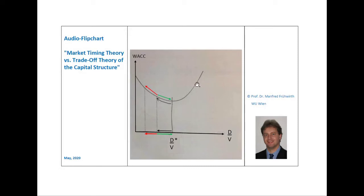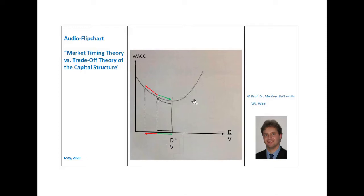Compared to the optimal capital structure, if the firm is using a lower debt ratio, then it could reduce the WACC by borrowing more and enjoying higher tax shields. In that case, the benefit from higher tax shields exceeds the damage from higher expected bankruptcy costs. If, however, the firm is using a higher debt ratio than the optimal capital structure, then it is already in the area where the higher expected bankruptcy costs from additional debt exceed the benefits from higher tax shields. Therefore, by reducing the debt ratio, the firm could decrease the WACC.